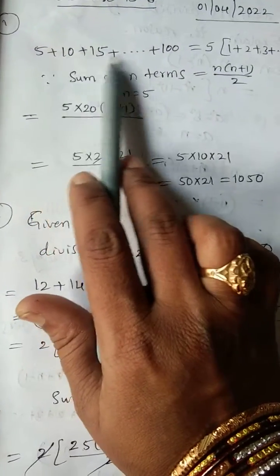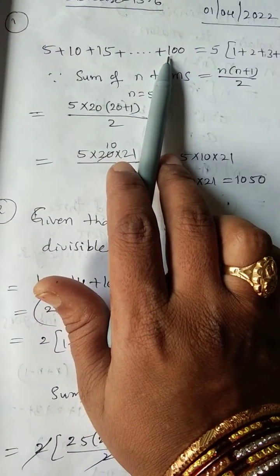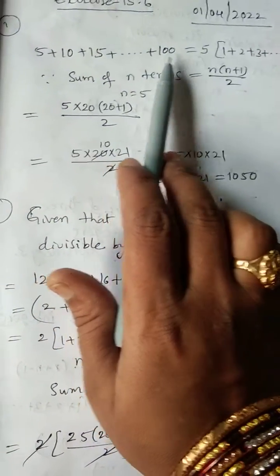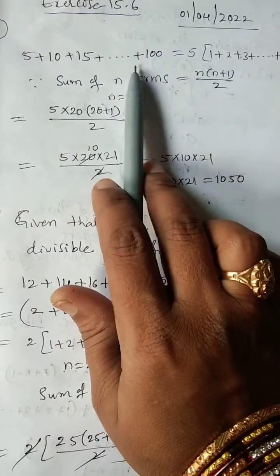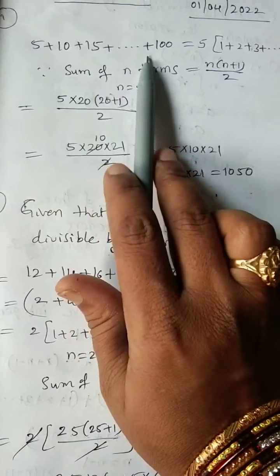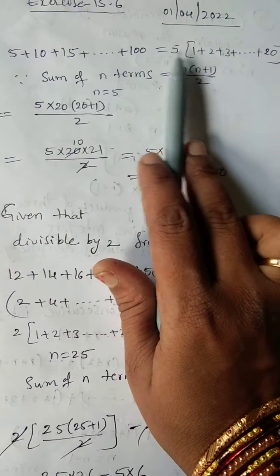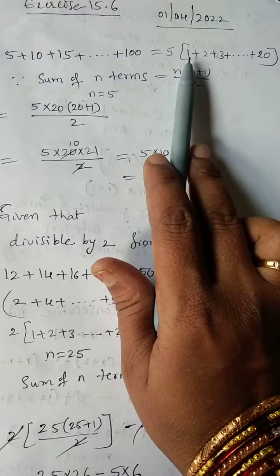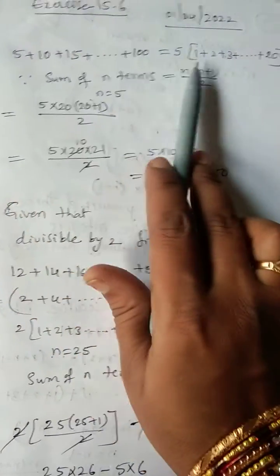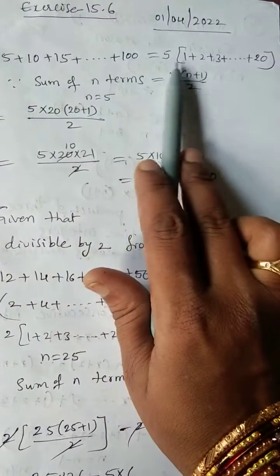We can't write all of them up to 100 — we can, but it will take time. So from all these terms we can take 5 common. It will become 5 into (1 + 2 + 3 ...). Because 5×1 is 5, 5×2 is 10, 5×3 is 15, like that.